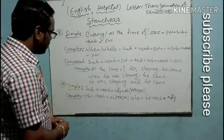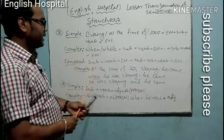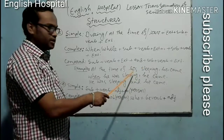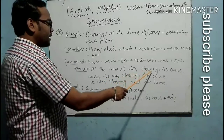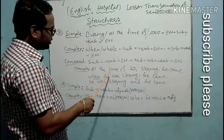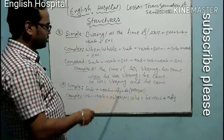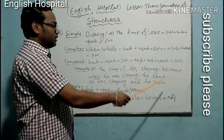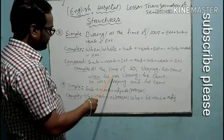So 'at the time of his sleeping' — this is the transformation of the simple sentence. When he was sleeping, he came. This is the complex sentence form: 'When he was sleeping, he came.' The non-finite phrase 'at the time of his sleeping' becomes the finite clause 'when he was sleeping.'